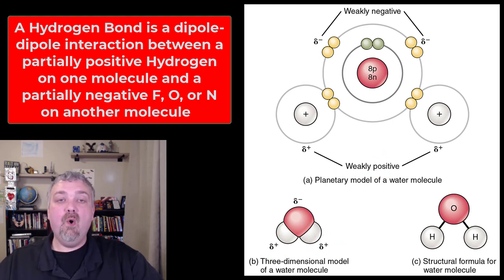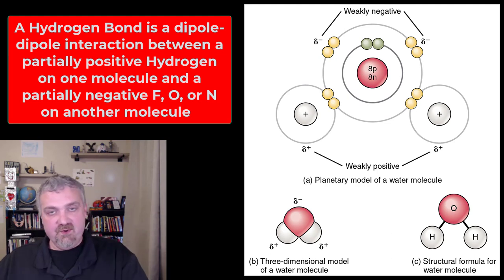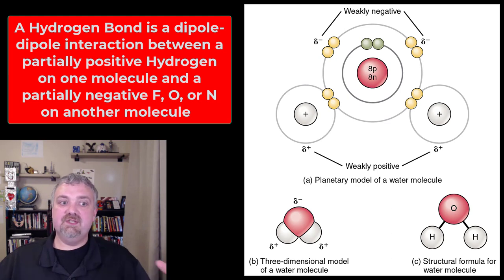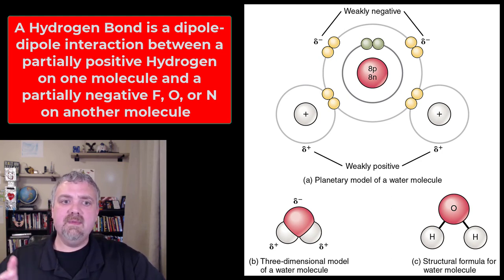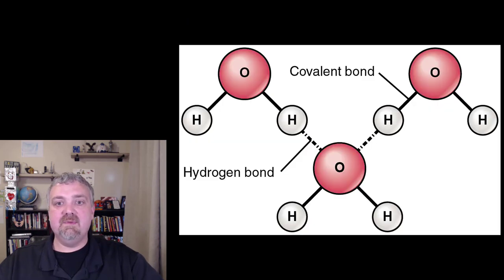It's called a dipole-dipole interaction because a dipole is anything that has two poles. This water molecule has two poles. The other water molecules are also going to have two poles which allows them to interact with one another. And this is where the hydrogen bond is going to come from. This is super important because this is what gives water molecules its special attributes which we'll cover in a separate video.